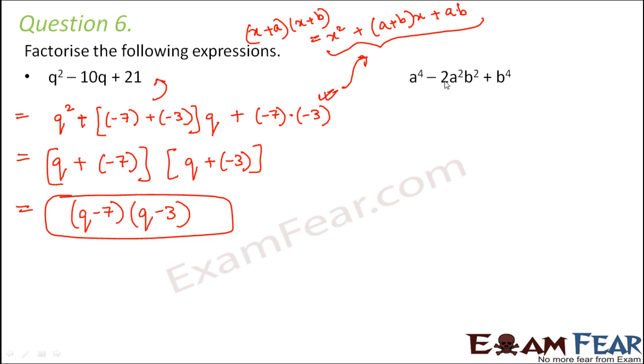Next one is a to the power 4 minus 2 a square b square plus b to the power 4. So here also, if you look at a to the power 4, this is a perfect square. So it can be written as a square whole square. If you look at b to the power 4, this is also a perfect square. So you can write it as b square whole square.